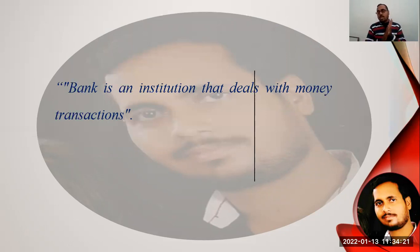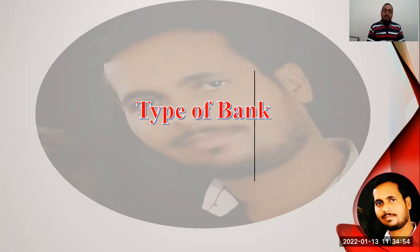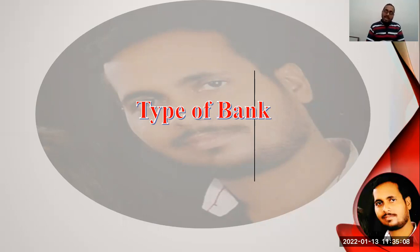We can define the bank in our own words: a bank is an institution that deals with money transactions. The institution performing the function of money exchange and money transaction is called the bank. After confirming the definition of the bank and knowing what a bank is, we are going to discuss the types of banks. In our modern life, there are huge kinds of banking institutions, and not all banks perform the same kind of tasks — there are different kinds of banks.